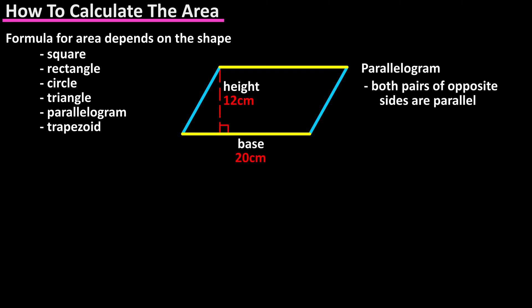The formula for the area of a parallelogram, which has four sides, and both pairs of opposite sides are parallel, meaning they run in the exact same direction, is base times height, where the height makes a right 90 degree angle with the base. In this diagram our formula is 20 centimeters times 12 centimeters, which is 240 centimeters squared.